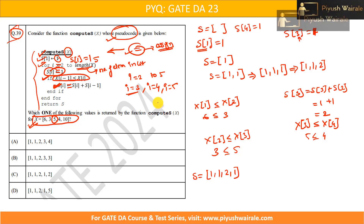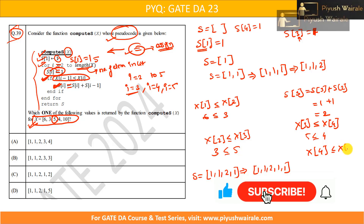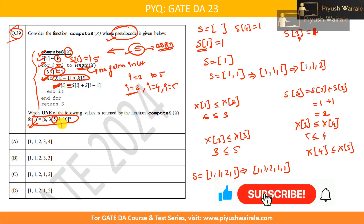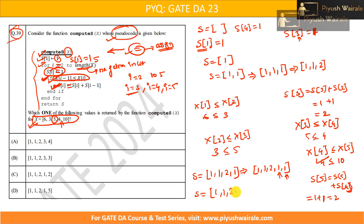For i=5, s[5] = 1, so s = [1, 1, 2, 1, 1]. The if condition checks x[4] ≤ x[5]: the fourth element is 4 and the fifth element is 10, so this condition is true. We update s[5] = s[5] + s[4] = 1 + 1 = 2. The final list is [1, 1, 2, 1, 2].